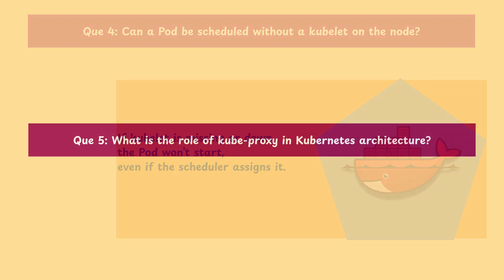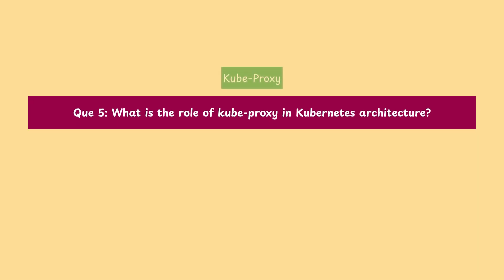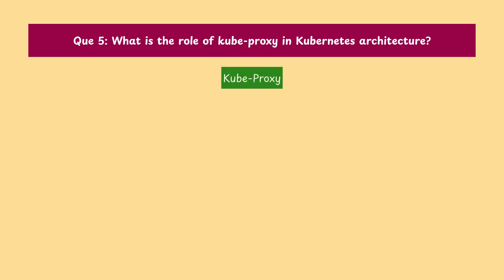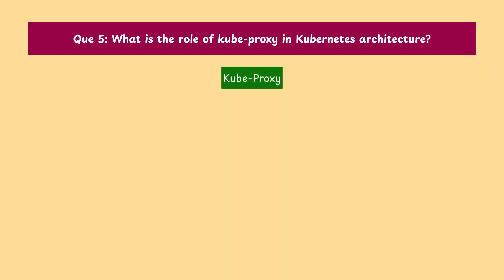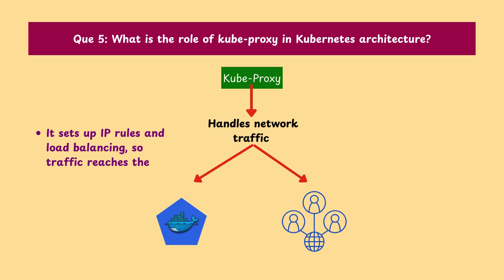Question 5: What is the role of kube-proxy in Kubernetes architecture? Kube-proxy handles network traffic between pods and services. It sets up IP rules and load balancing so traffic reaches the right pod in the cluster.